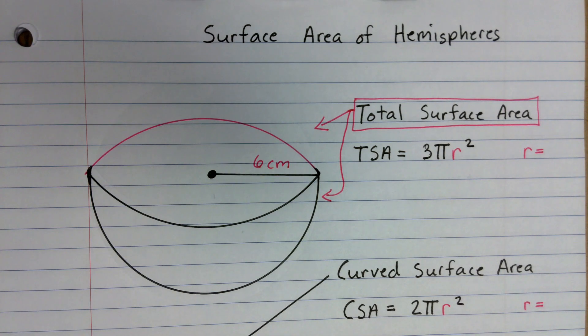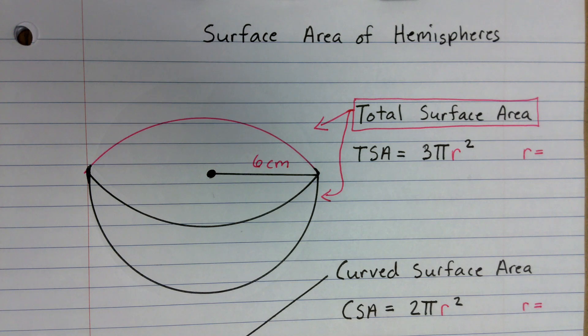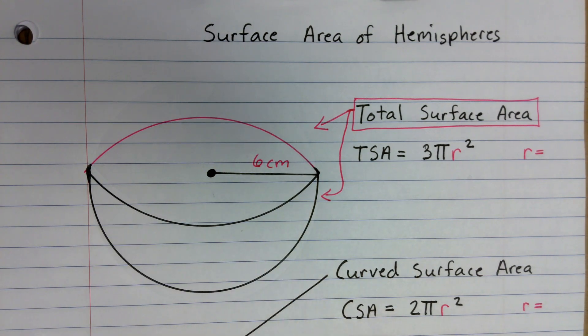You are going to have a different formula if you're looking at a curved surface area. So if we just wanted to find this curved area in here, we would just use the formula 2πr².